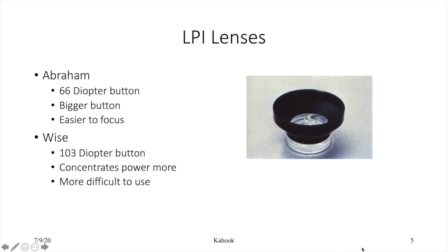When it comes to which lens to use, we have a couple of different options. The Abram lens is a 66 diopter button — it's bigger and easier to focus. The Wyze lens, on the other hand, is 103 diopters; it concentrates power more but is more difficult to use.